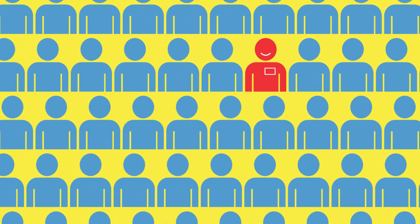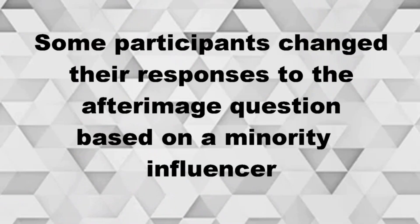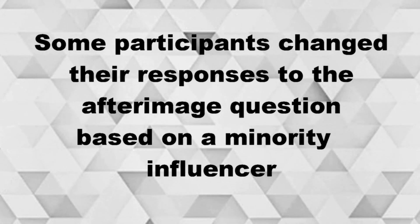In this experiment, they placed a minority influencer within the group who gave the wrong answer. They were looking to see whether that changed the participants' perception of what they saw, or what they said they saw. And often it did happen that somebody was influenced by this minority, even though the minority person was actually giving a slightly incorrect answer.